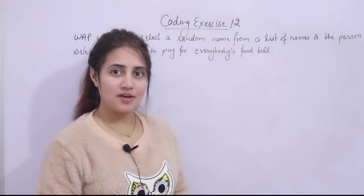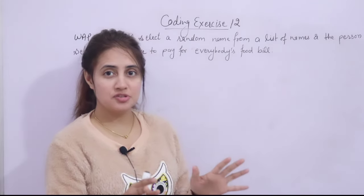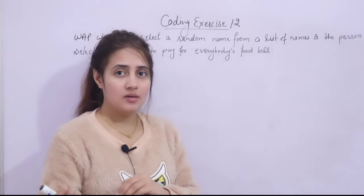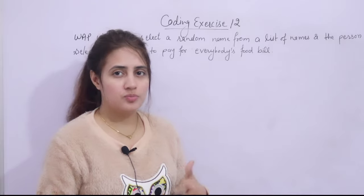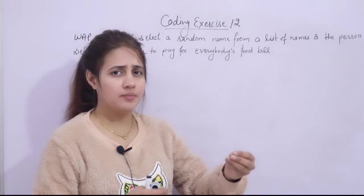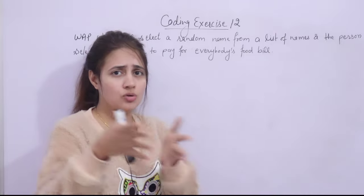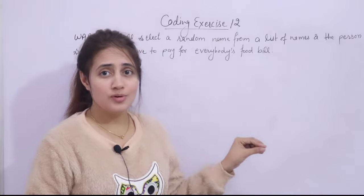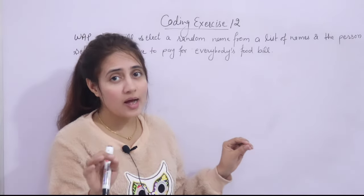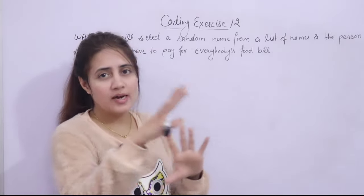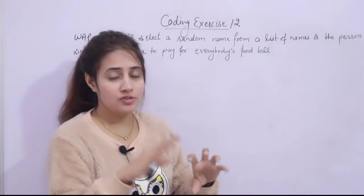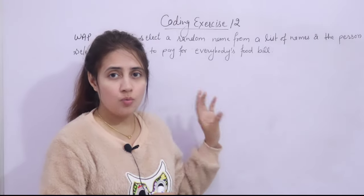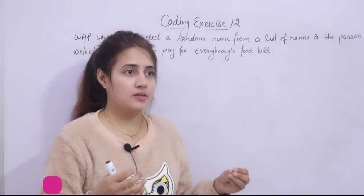In this series on learning Python, in the previous video we covered the random module, its functions, and based on that we did one coding exercise — heads or tails — where you wrote a virtual coin-toss program that generates a random number, either zero or one, and based on that tells if it's heads or tails. That was a simple one, but in this video we'll discuss one more coding exercise that is a little bit more complicated.